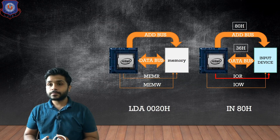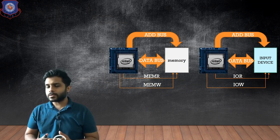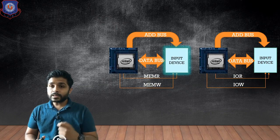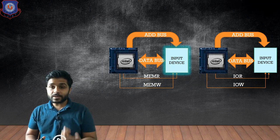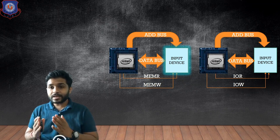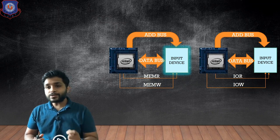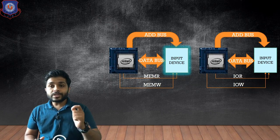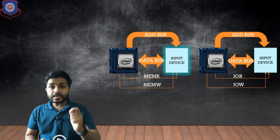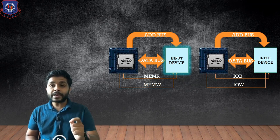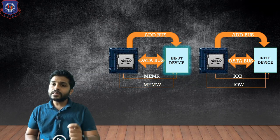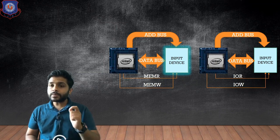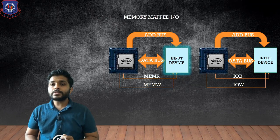Now, what if we replace memory with the input device — will the microprocessor know that we have changed the memory with the input device? The answer is no; the microprocessor does not know. What I am trying to say is, you can still connect an input device using the control signal dedicated for memory. You can connect the input device using memory read and memory write, and when you do that, it is known as Memory Mapped I/O.